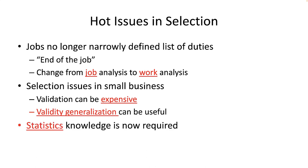If concepts like validity, reliability, multiple regression, standardized scores, the standard error of measurement, cut scores, and multiple hurdles all scare you, then you are free to go back to making bad decisions based on intuition, hunches, tea leaves, and tarot cards. If you want to find out how the pros make selection decisions, then stick around. Modern selection processes have benefited greatly from applied statistics and measurement. If you can't measure it, it probably is not useful in a selection decision. Employee selection is actually closer to rocket science than it is to voodoo — so strap in, you'll learn a lot.